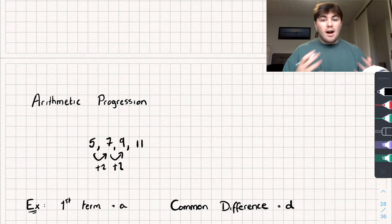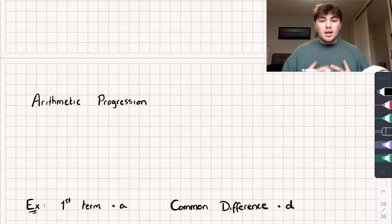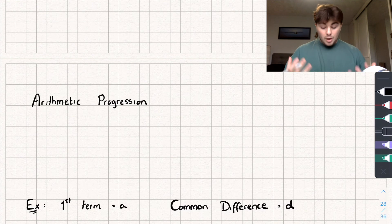So arithmetic progression - the first thing we're going to do is look at a generic arithmetic progression and find a way of finding the nth term of it by a formula.